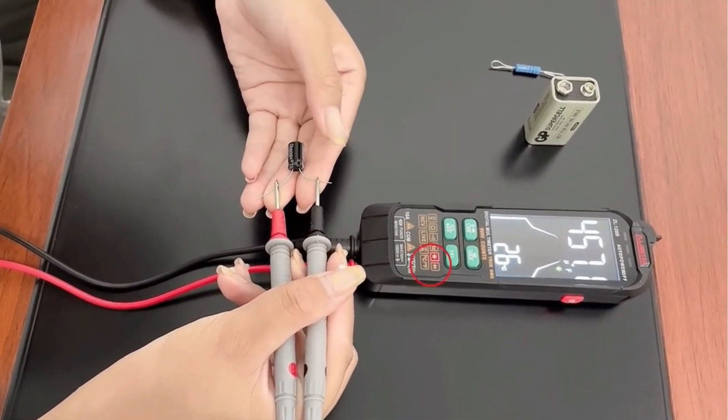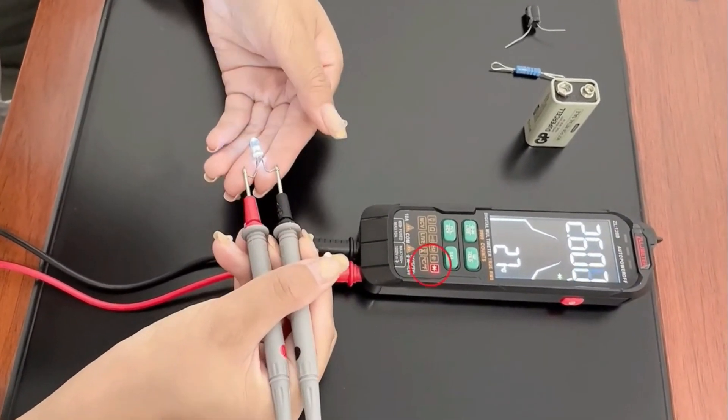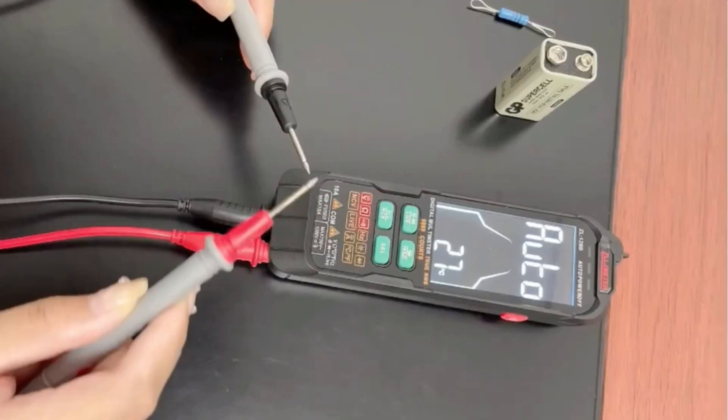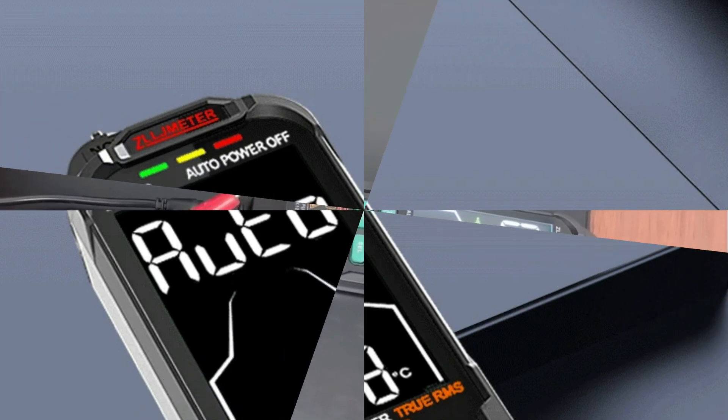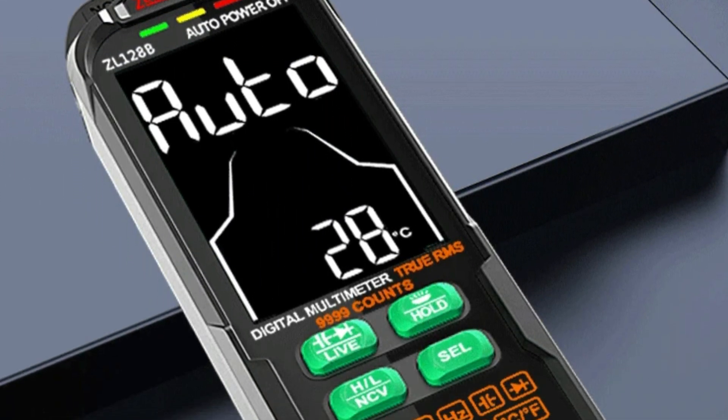The device measures capacitance and frequency up to 10 MHz. It features true RMS technology for precise and reliable measurements, and a 9999 count digital display for high resolution readings.